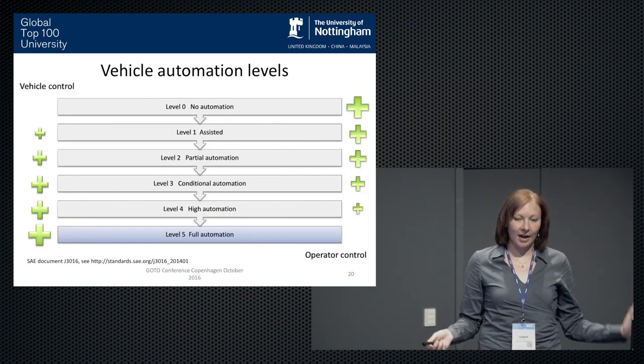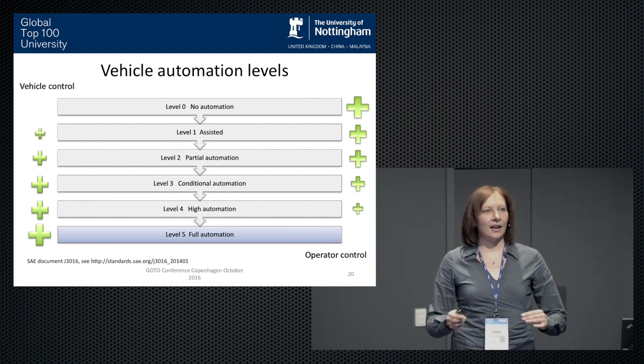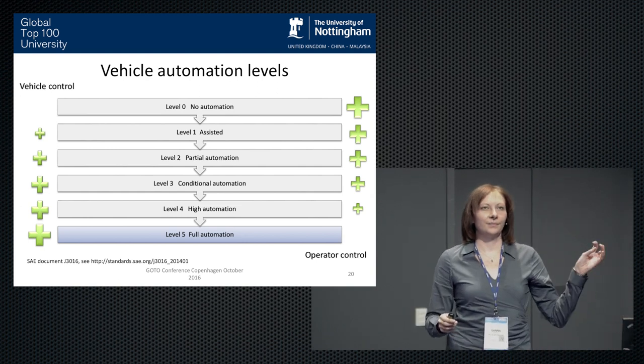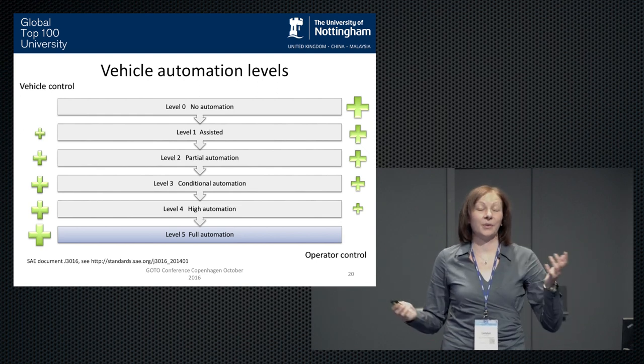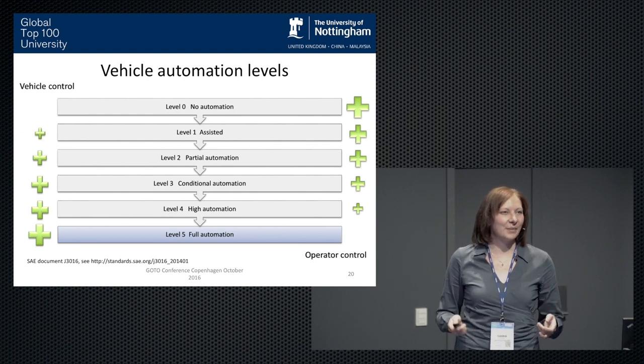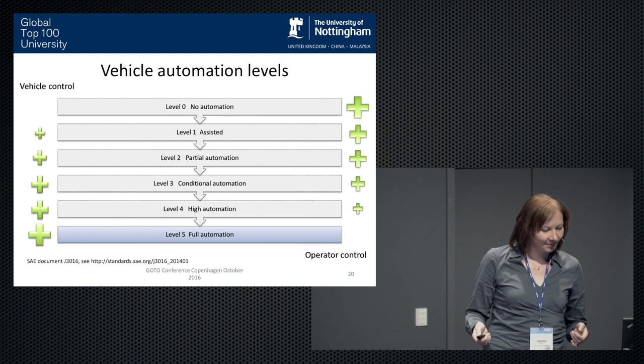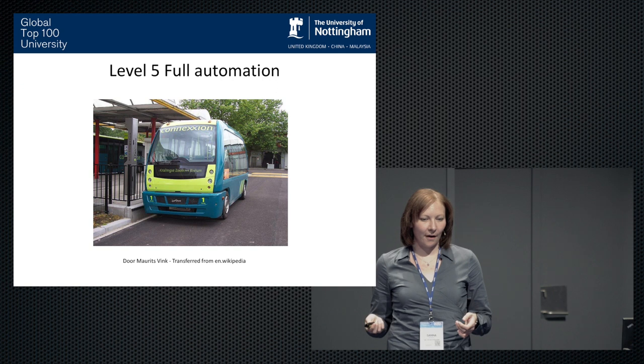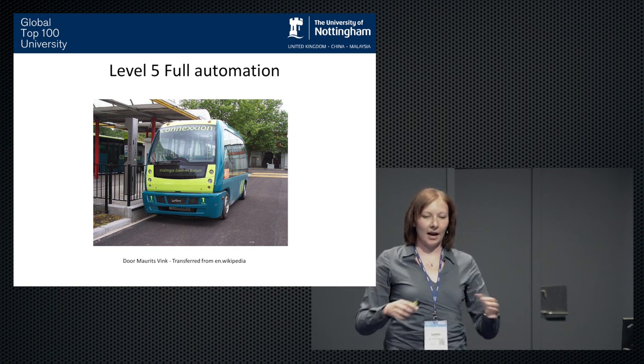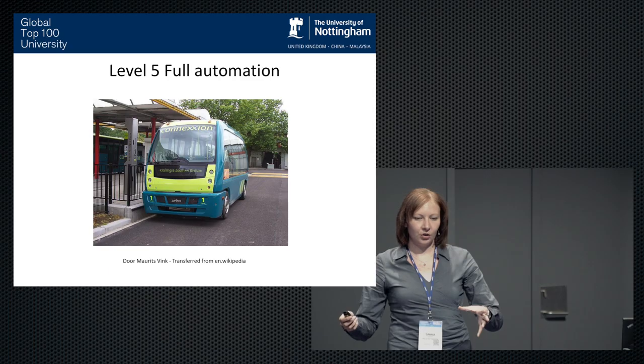Level five is the full automation where the car can, on its own, drive from point A to point B. Everything the human has to do is to switch on the system and to put in the destination. One example I found is the park shuttle in Rotterdam. It's like an autonomous shuttle system that's working in this business park type environment at very low speeds and it's quite restricted and it still works with magnetic guidance in the road.